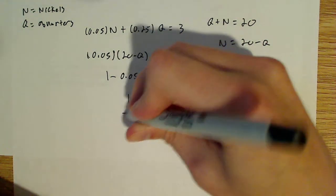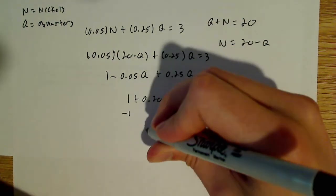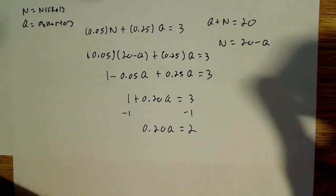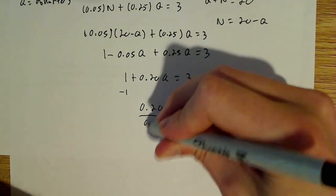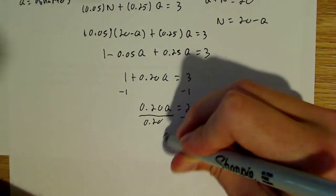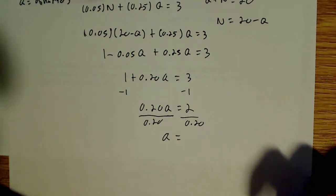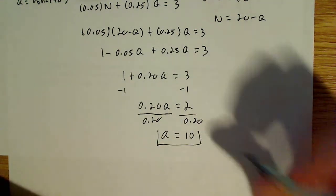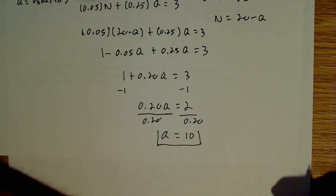So we're one step closer. Subtract one from both sides and I'm left with 0.20q is equal to two. Divide both sides here by 0.20 and what I'm left with is q is equal to 10. So now I know how many quarters I have because I said let q equal the number of quarters.